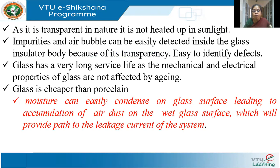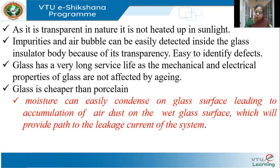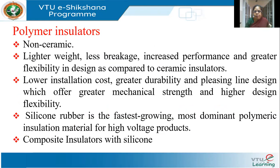Glass insulators are very cheap and have many advantages. However, moisture can easily condense on the glass surface, leading to accumulation of dust. This can cause a leakage current to flow between the insulator and the ground, which is one of the disadvantages.